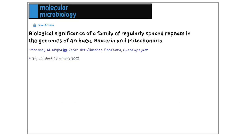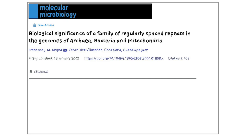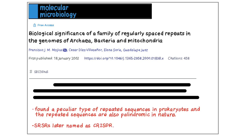In 2002, Francisco Mojica coined the term short regularly spaced repeats, SRSRs, when he found a peculiar type of repeated sequences in prokaryotes and the repeated sequences are also palindromic in nature. SRSRs later went on to be named as CRISPR.